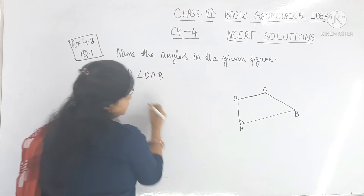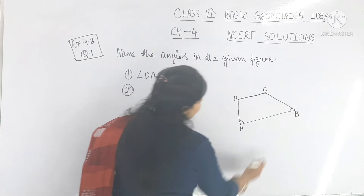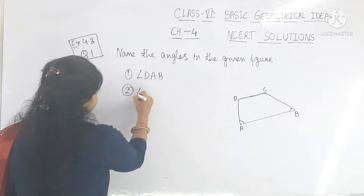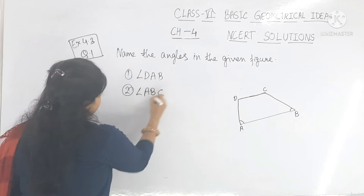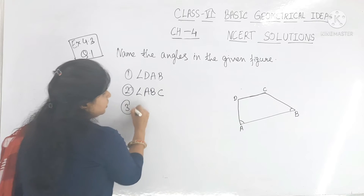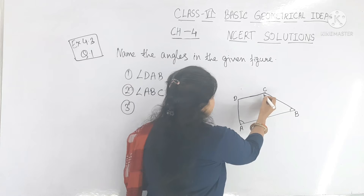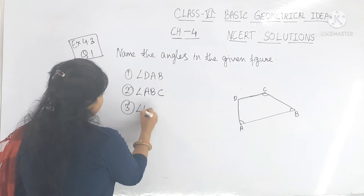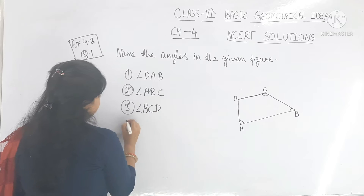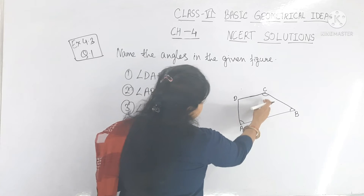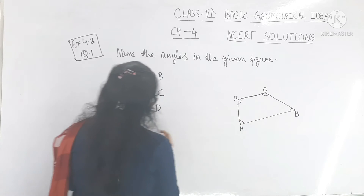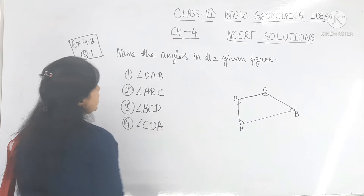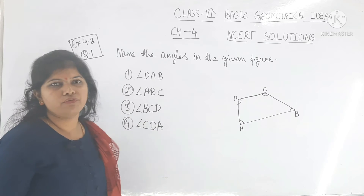Number 2 is angle ABC. Number 3 is angle BCD. Number 4 is angle CDA. These are the angles of the given figure.